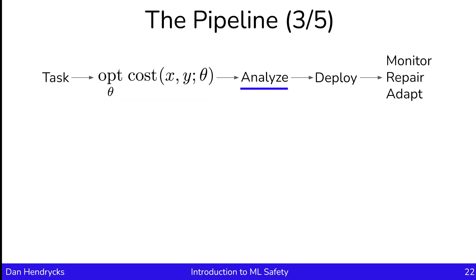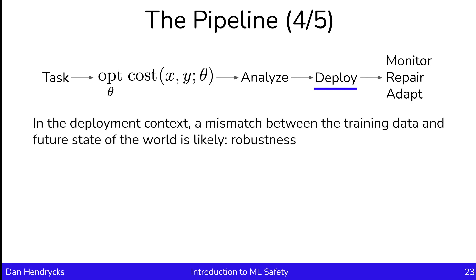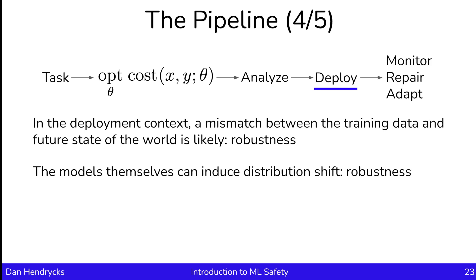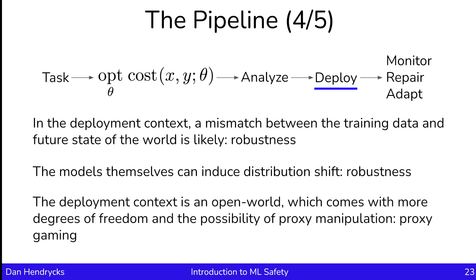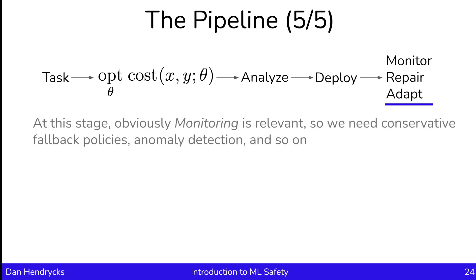At the analysis part of the pipeline, researchers could stress test models, analyze models, or try to discern if they have unintended functionality — touching on robustness, transparency, and detecting Trojans. In the deployment context, a mismatch between training data and the future state of the world is fairly likely, touching on robustness. Models themselves can induce a distribution shift, and since the deployment context is often open world, this can come with more degrees of freedom and the possibility of proxy manipulation — touching on proxy gaming. After deployment, we need to monitor, repair, and adapt the model; monitoring tools such as anomaly detection can trigger conservative fallback policies.